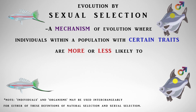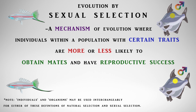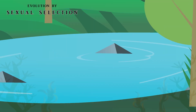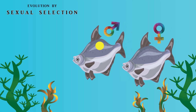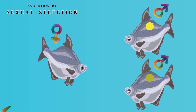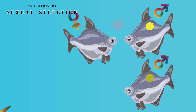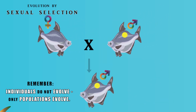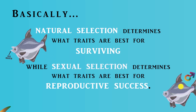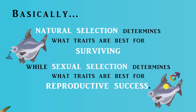Sexual selection is a process where individuals within a population with certain traits are more or less likely to obtain mates and have reproductive success compared to other individuals within that population with differing traits. Within that same population of fish, let's say that the males have a bright spot on the side of their body. This spot does not help them find food or swim faster or aid in their survival in any way — it actually increases the chance of a predator seeing them. But females prefer males with the brightest spot. So a male with the brightest spot, able to survive to sexual maturity, is going to have greater success mating with females. The bright spot will be passed on to his and her offspring — it is a sexually selected trait.